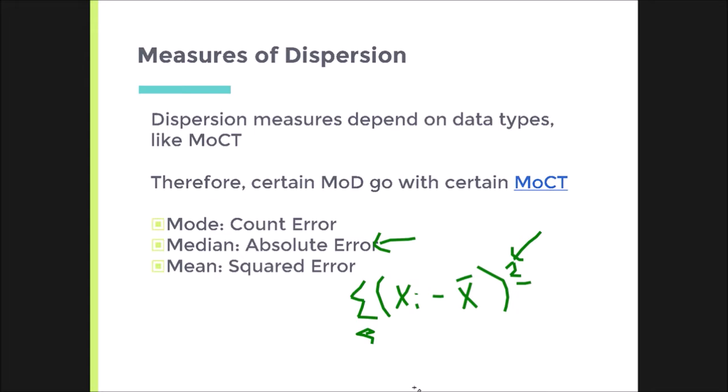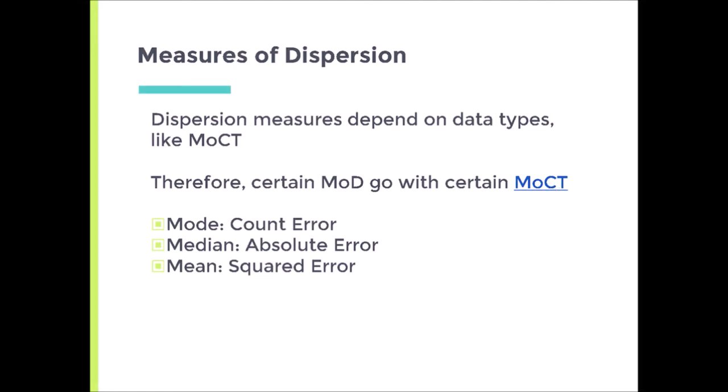Because obviously you will mispredict every person's score. These values are not going to equal the average or the median, whatever it may be. So you have to square those terms to avoid that issue. So these are important things to realize: every measure will minimize certain types of error and will go along with certain types of data and measures of central tendency.